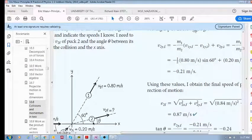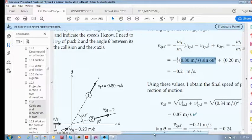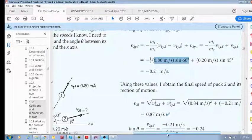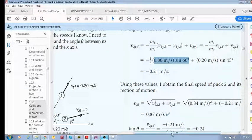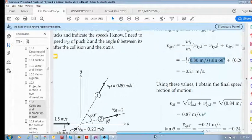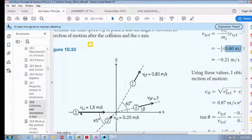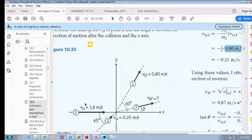Plus, what is v1y initial? v1y is zero because there was no vertical component.